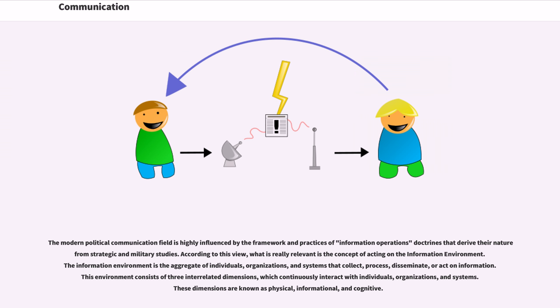The modern political communication field is highly influenced by the framework and practices of information operations doctrines that derive their nature from strategic and military studies. According to this view, what is really relevant is the concept of acting on the information environment. The information environment is the aggregate of individuals, organizations, and systems that collect, process, disseminate, or act on information. This environment consists of three interrelated dimensions which continuously interact with individuals, organizations, and systems. These dimensions are known as physical, informational, and cognitive.